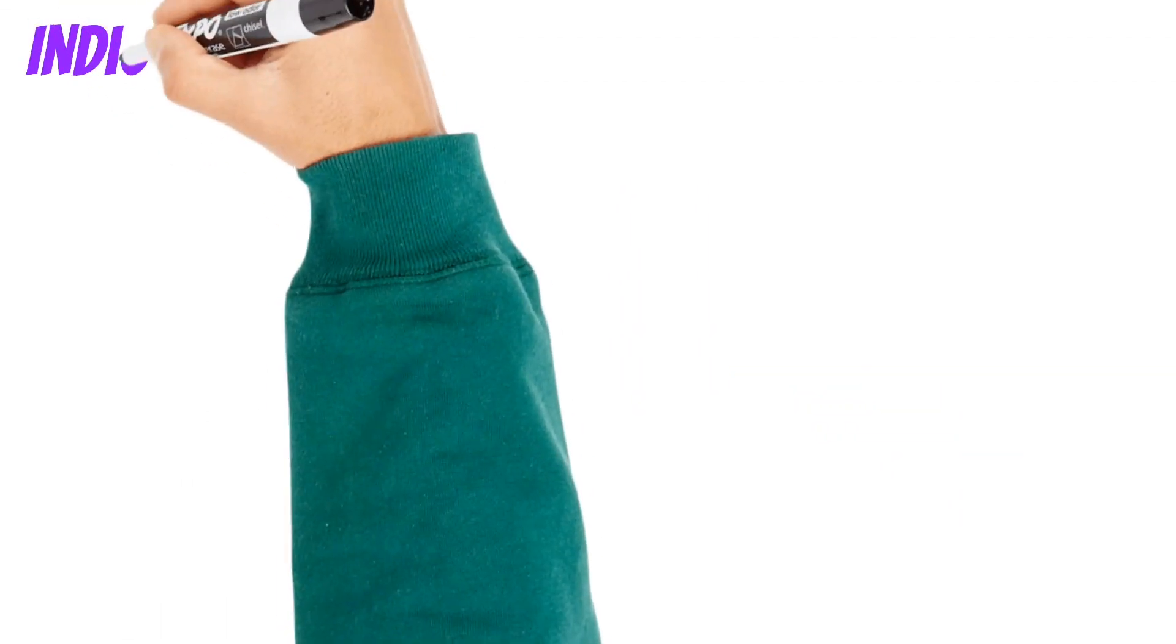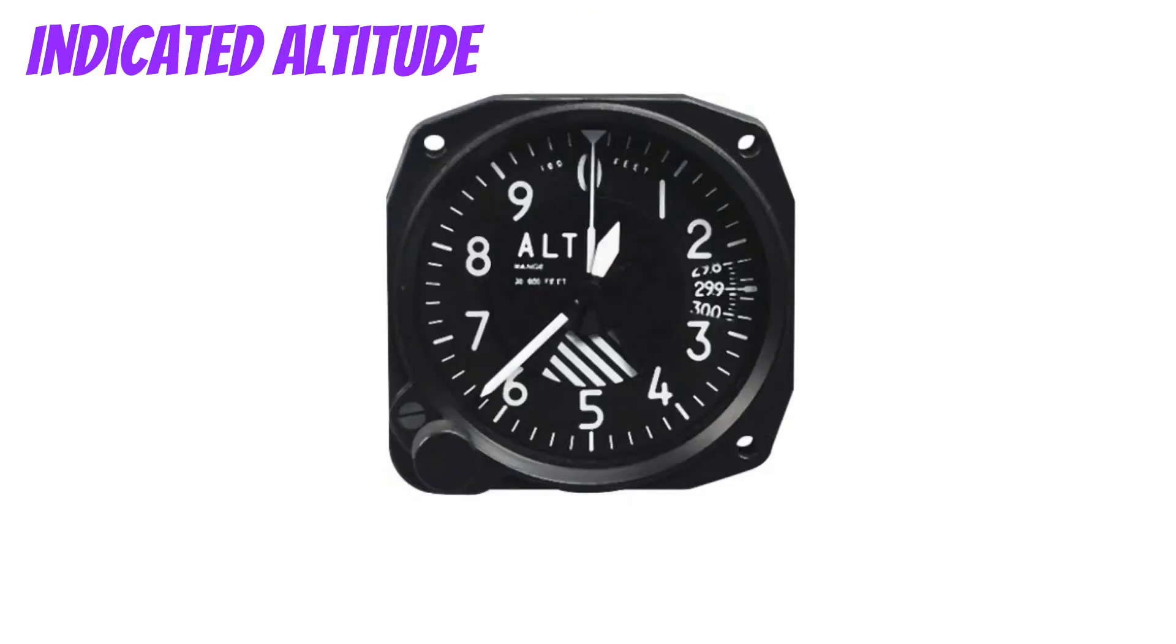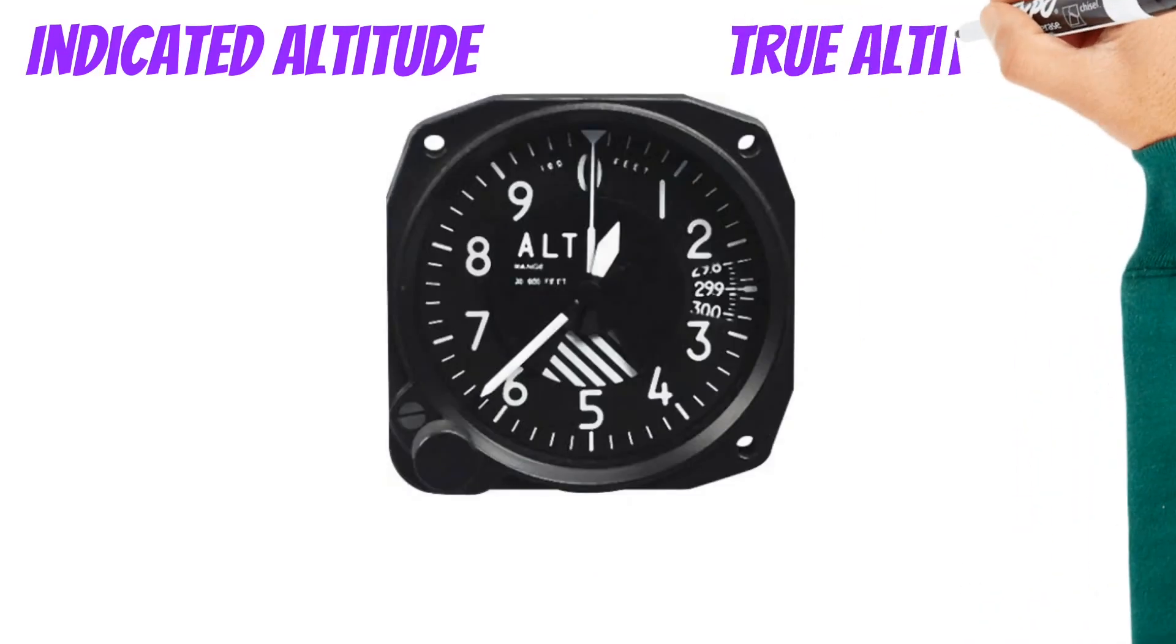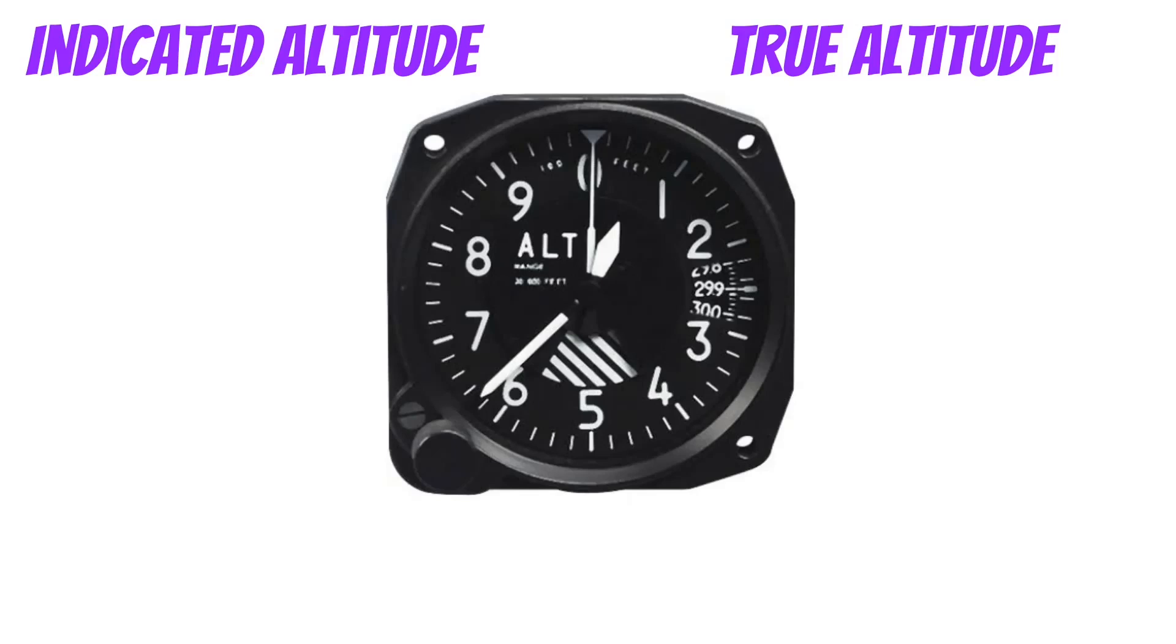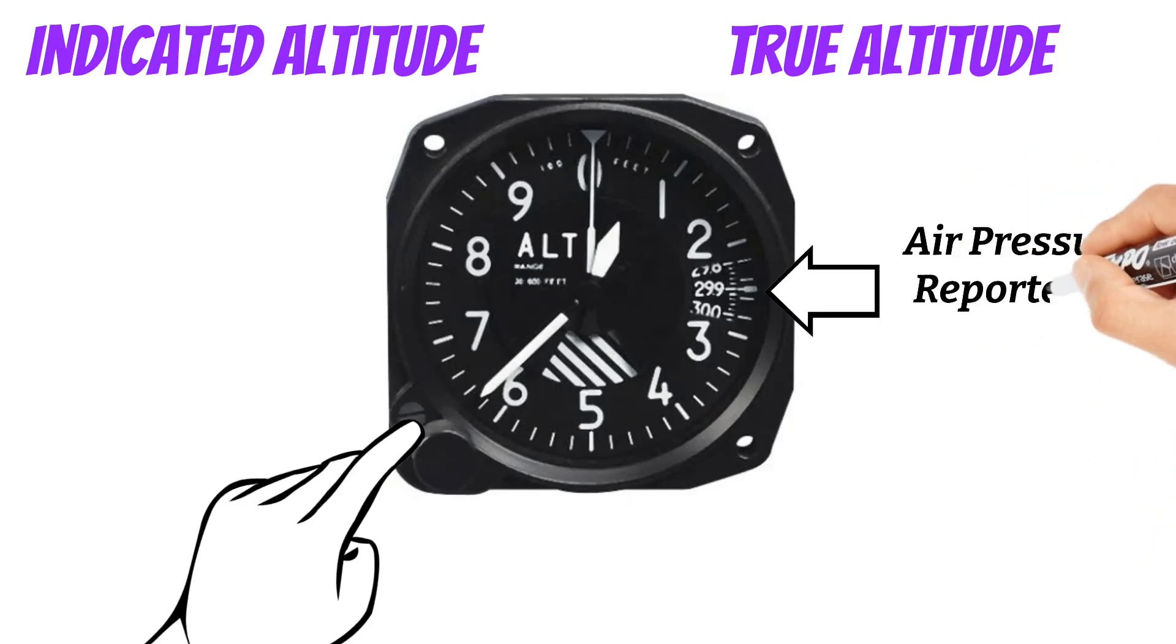Now that you have a better understanding about the different types of altitude, let's talk about how we can adjust the altimeter so the indicated altitude is as close to true altitude as we can get it. To do this, you'll want to spin this little knob until the Kollsman window reads the air pressure reported at the airfield.